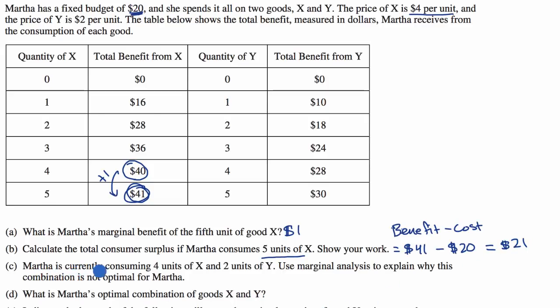Martha is currently consuming four units of X and two units of Y. Use marginal analysis to explain why this combination is not optimal for Martha. Let's think about what the marginal benefit is from every incremental unit of X or Y, and then the marginal benefit per dollar. I'm gonna make an extra column here. Let's call this marginal benefit of X, and this marginal benefit of Y.